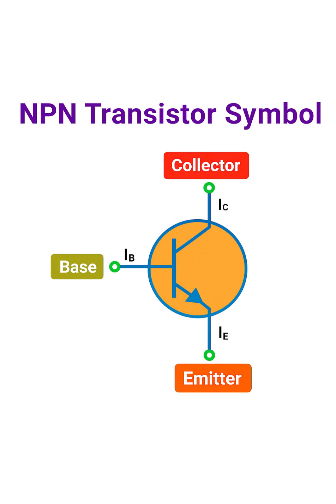First, let's identify the three terminals. A transistor has three connections. At the top, we have the collector. In the middle, we have the base. And at the bottom, we have the emitter.